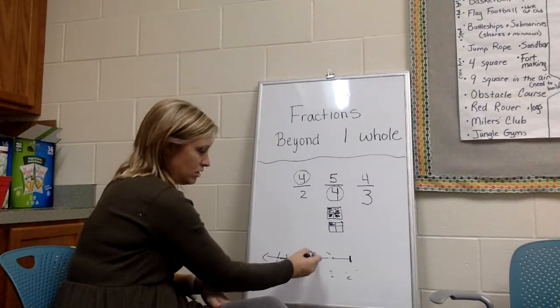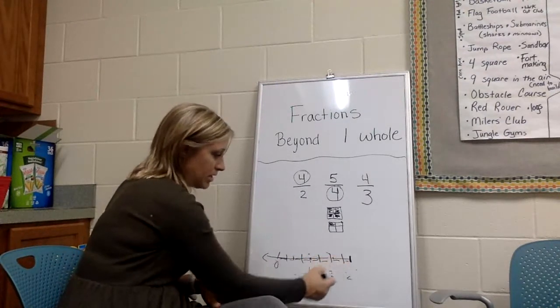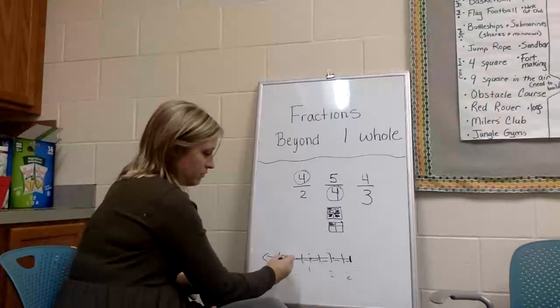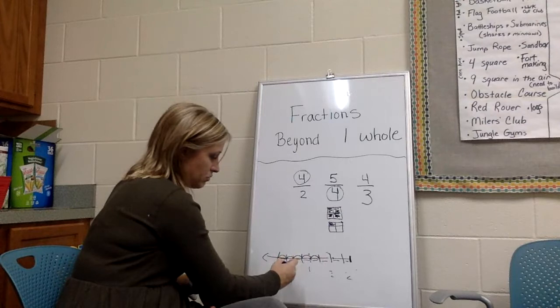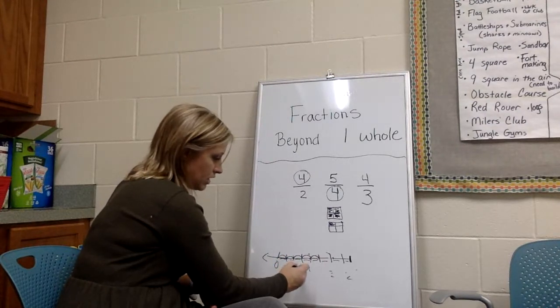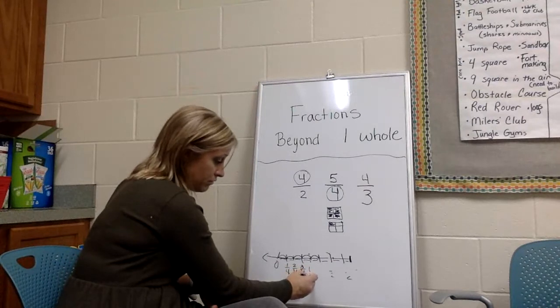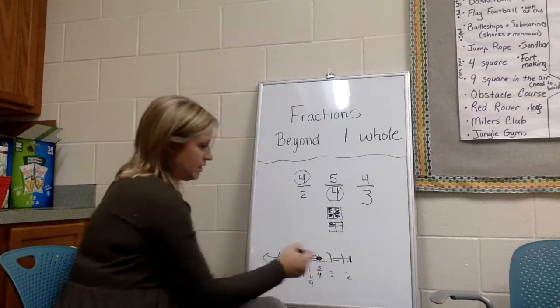Down here on my number line, I would have needed four parts to the whole. So I would have had one fourth, two fourths, three fourths, four fourths, five fourths. One whole is four fourths, and then five fourths would have gone right there on the number line.